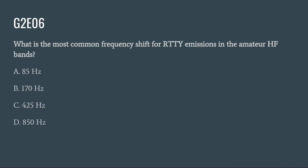G2E06: What is the most common frequency shift for RTTY emissions in the amateur HF bands? A. 85 Hz. B. 170 Hz. C. 425 Hz. Or D. 850 Hz. The correct answer is B: 170 Hz.